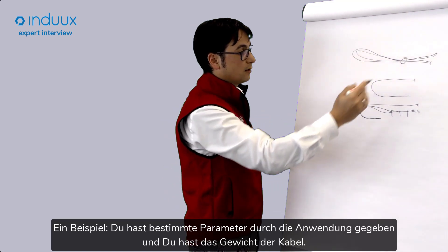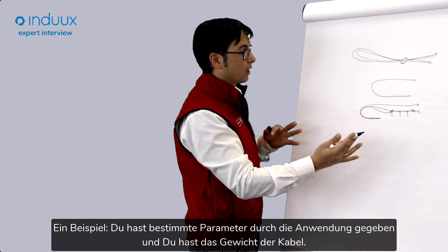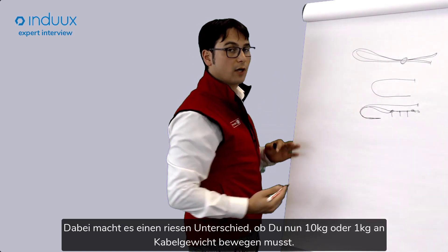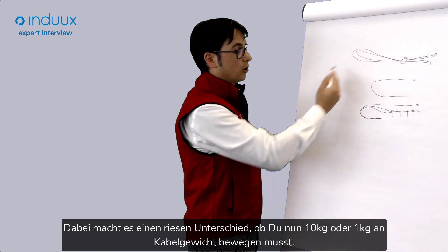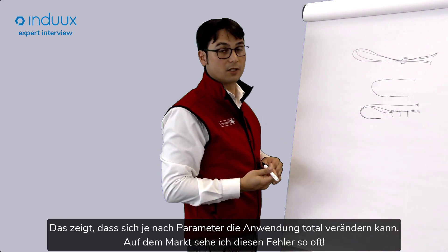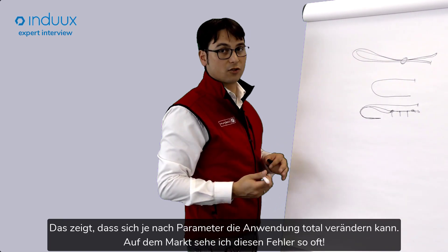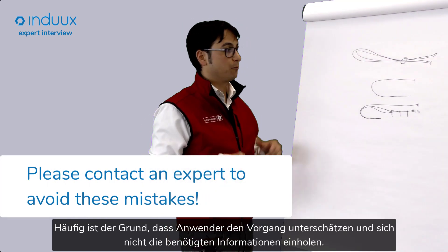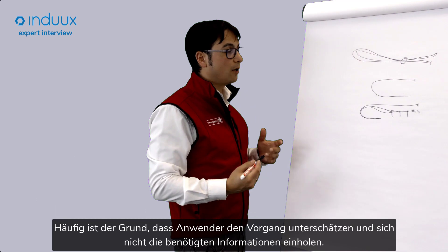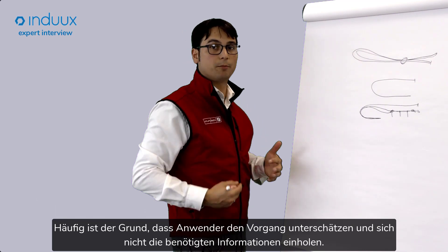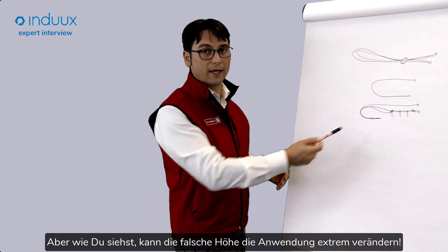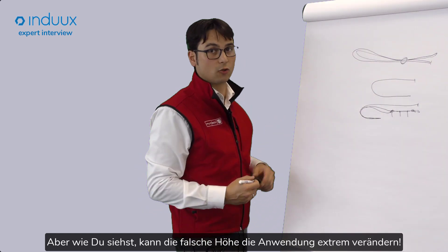One key parameter, for example, is cable weight. You have given circumstances and parameters, and cable weight makes a big difference — whether you're carrying, pushing, and pulling 10 kilograms per meter of cable or just 1 kilogram, to make it extreme. It changes the application totally. These kinds of mistakes are common in the market because people don't think about it, underestimate it, or don't push to get the information they need. If you choose the wrong setup, it can change the application completely and you will not get the lifetime you need.